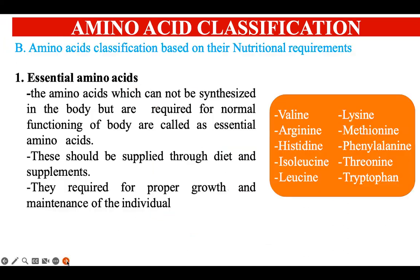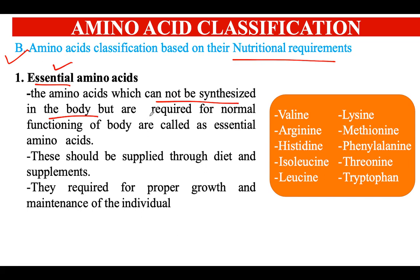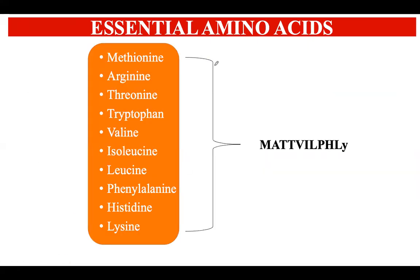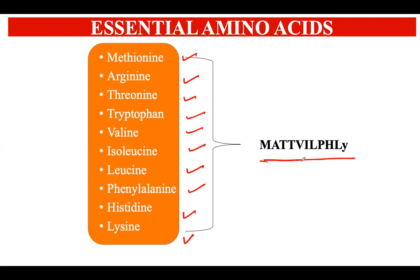The second type of classification is based on nutritional requirements: essential amino acids and non-essential amino acids. Essential amino acids cannot be synthesized in the body and must be obtained from outside sources through diet or supplements; they are required for proper growth and maintenance. A mnemonic to remember the essential amino acids is 'MAT WILL FLY': Methionine, Arginine, Threonine, Tryptophan, Valine, Isoleucine, Leucine, Phenylalanine, Histidine, and Lysine.